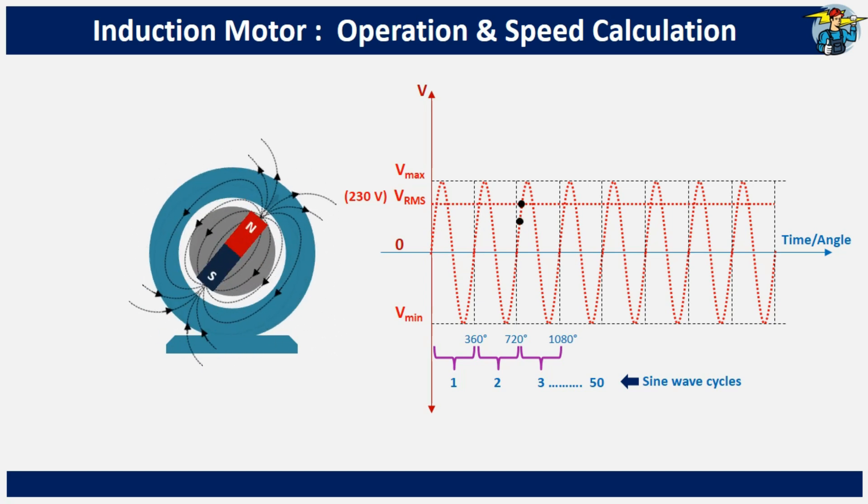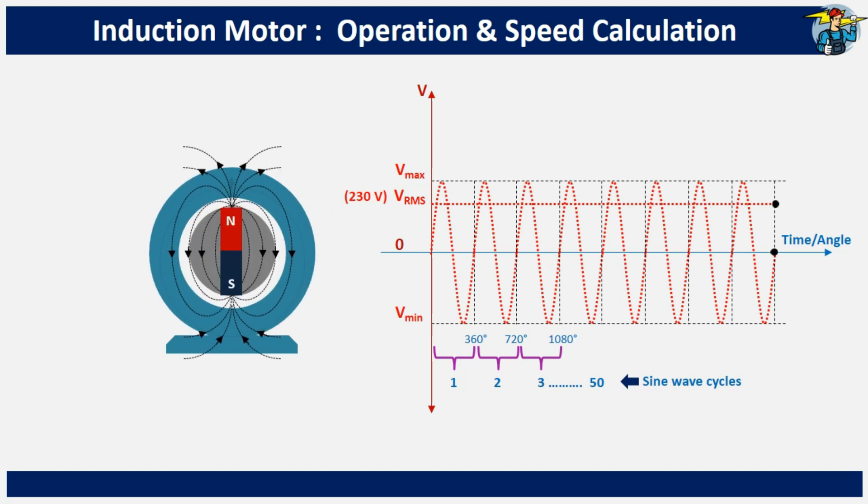We take the RMS value of voltage for calculations, instead of the constantly changing voltage values in a cycle. The RMS voltage is depicted as a straight line here. Although only 8 360-degree cycles are shown, a supply frequency of 50 Hz means that 50 similar voltage sine wave cycles repeat within one second.